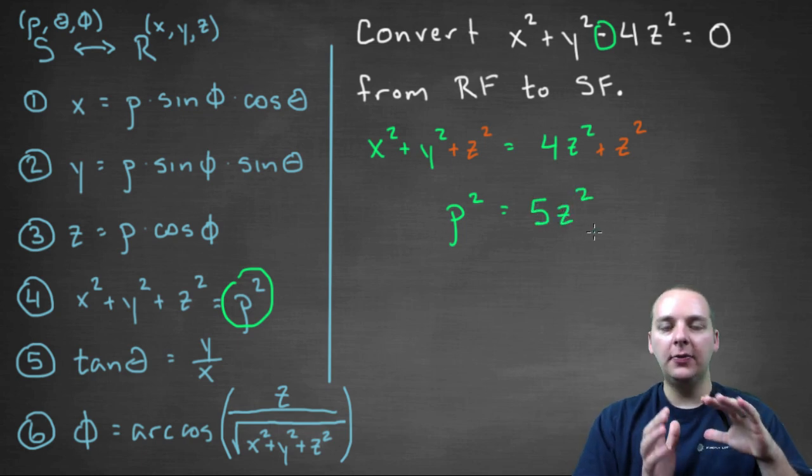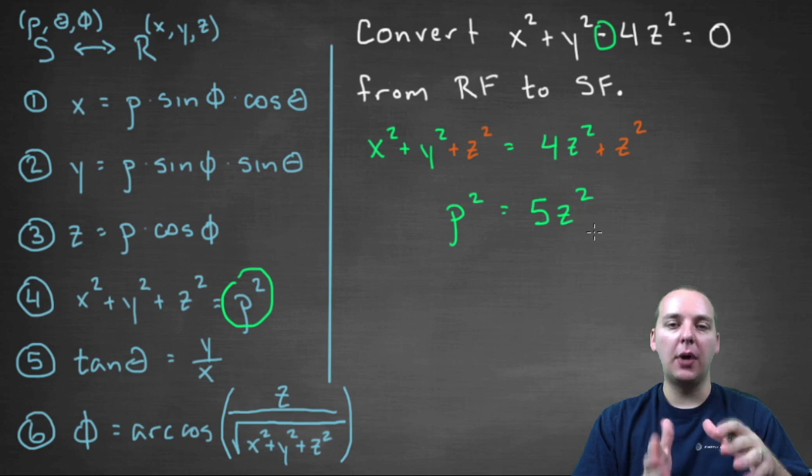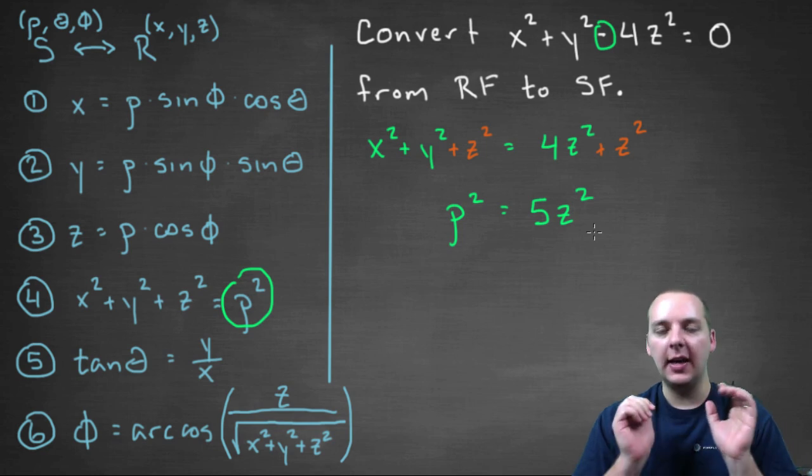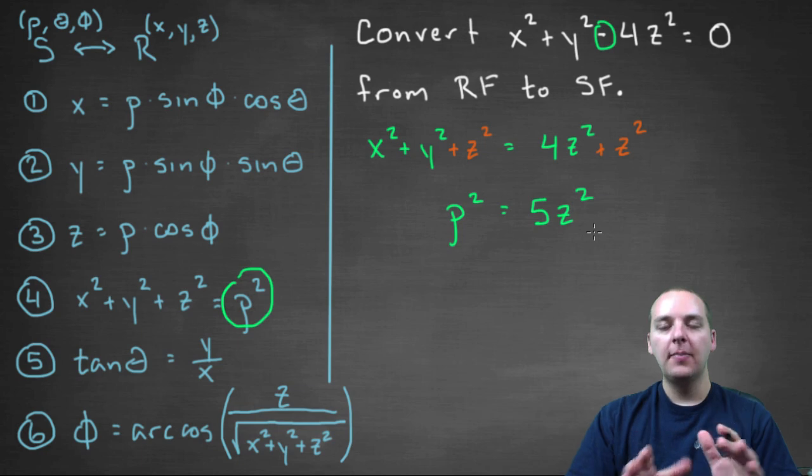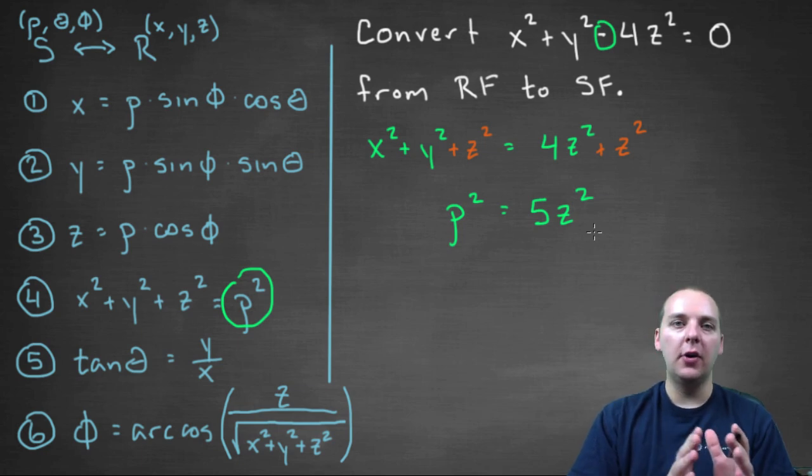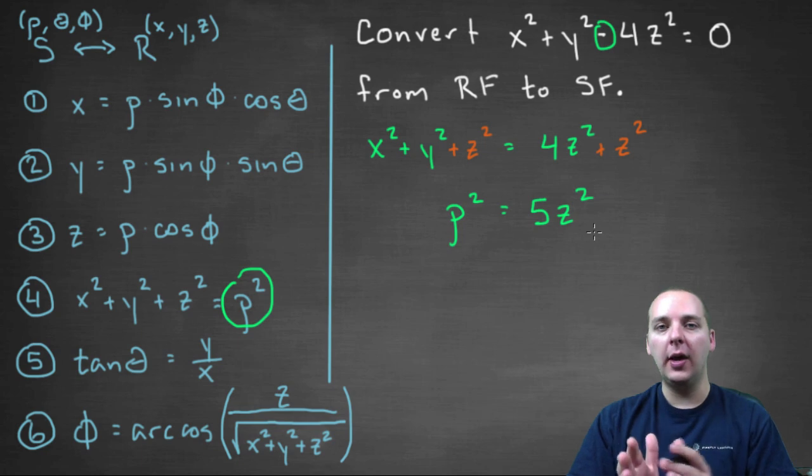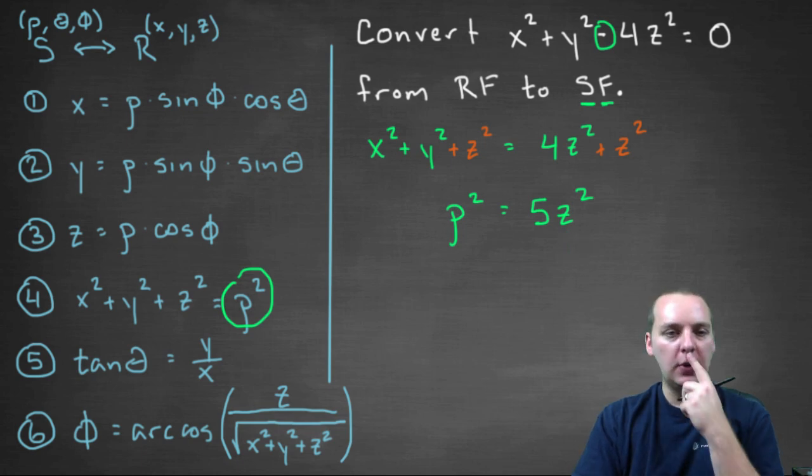Now a lot of students that I've had in the past would probably stop right here and say, hey I've got a ρ and that's spherical so we're done. But you have to remember with all these examples, you have to convert everything all the way. So if you're trying to convert to spherical form but you still have a z in here, you're not done. So we have to also get rid of that z² as well.